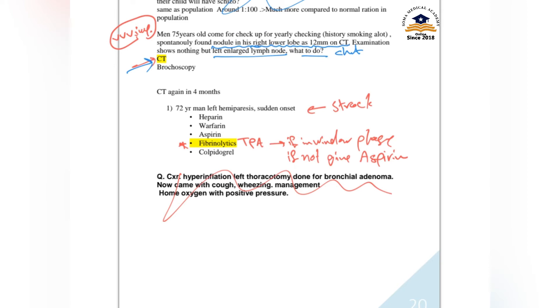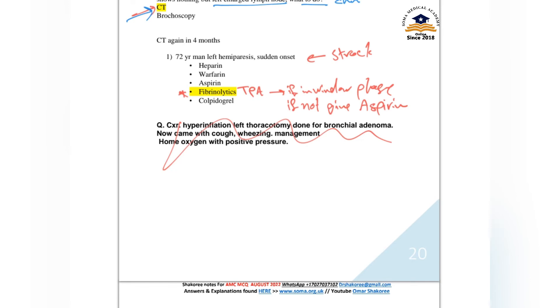72-year-old with left hemiparesis, sudden onset, this is acute stroke. What to give? Either you will give aspirin or you will do fibrinolytic like TPA. But remember, you need the full scenario to see if the patient is in the window phase. If the patient with acute stroke is in the window phase, give TPA fibrinolytic. If not in the window phase, give aspirin.